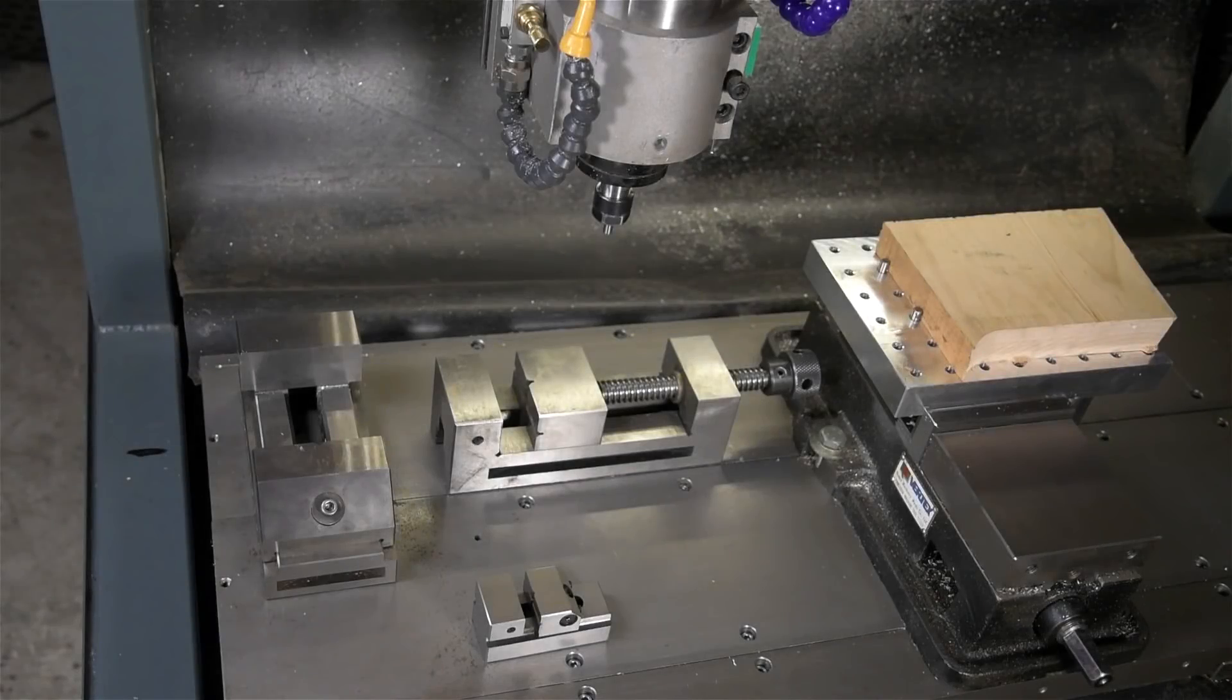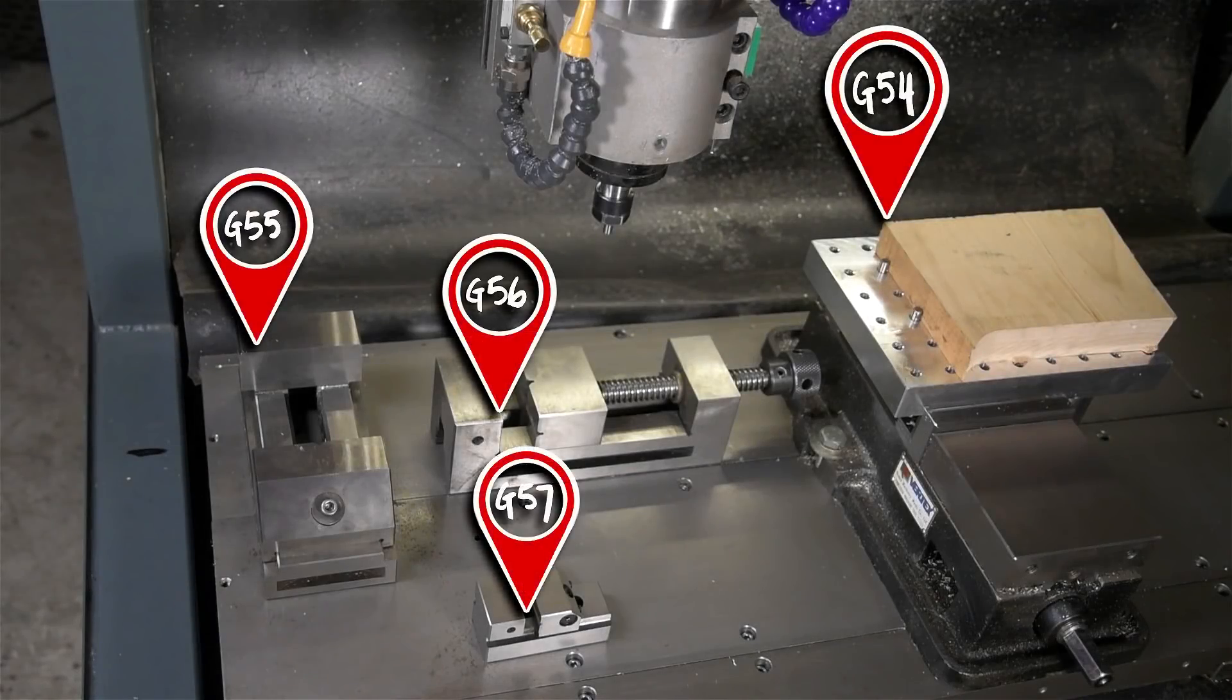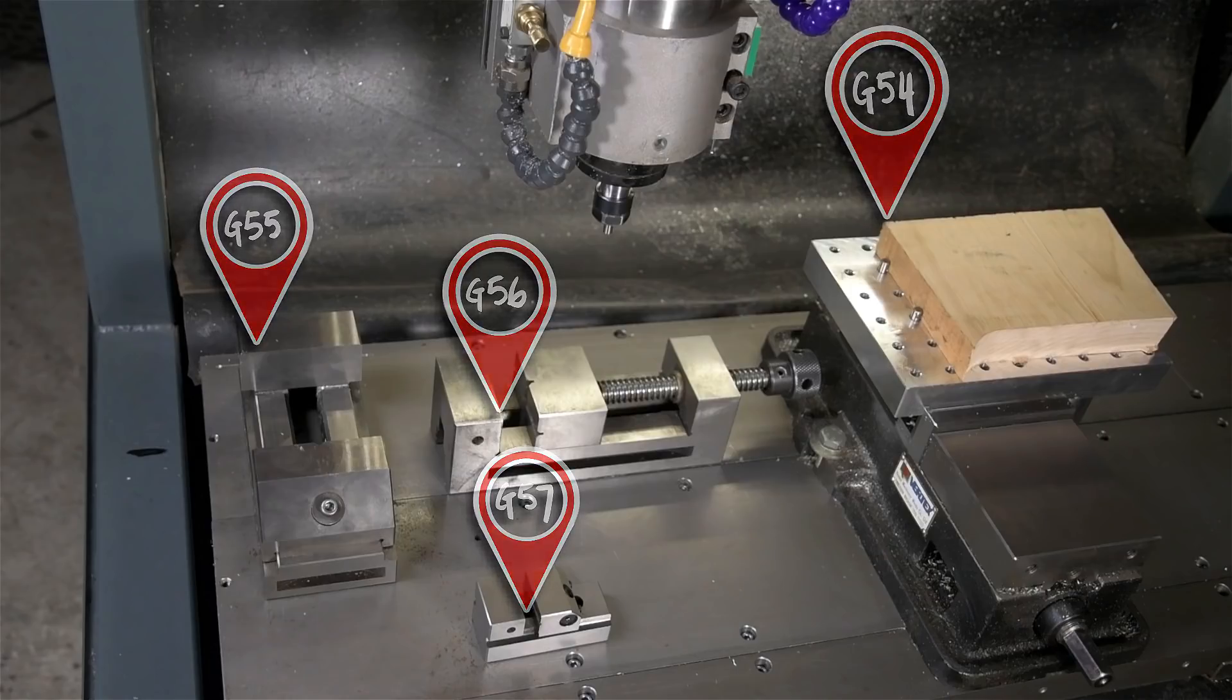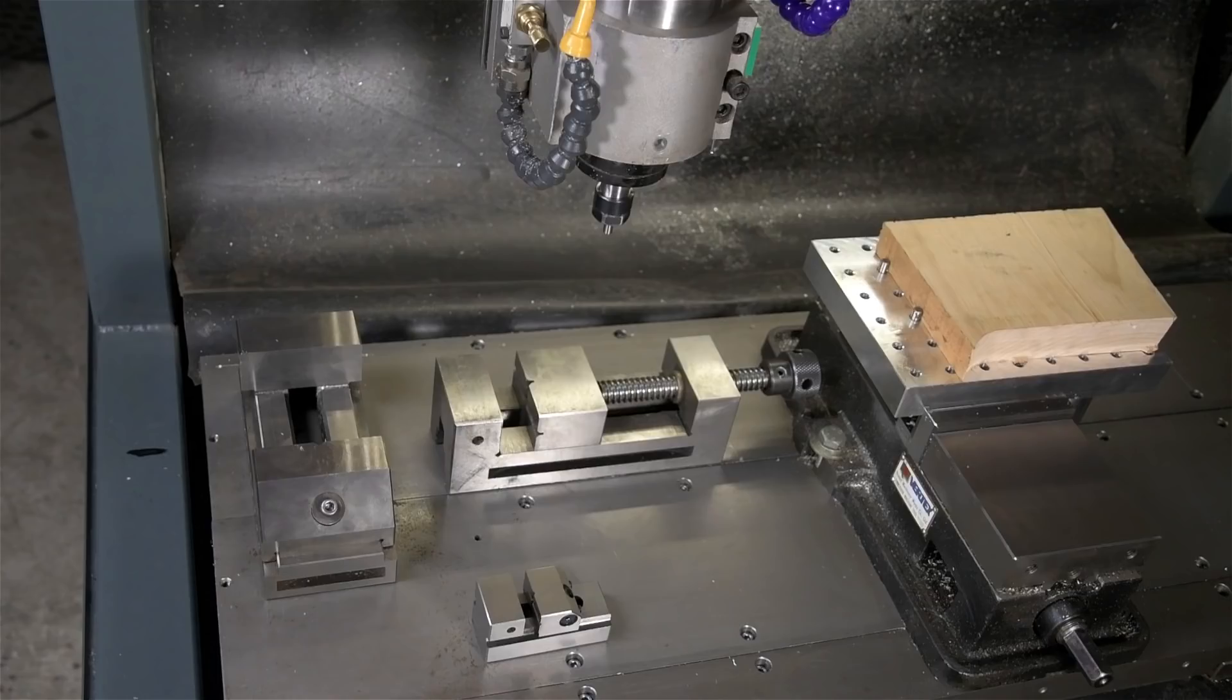To recap, here's what we've mapped out: four work offsets. These are stored in an offset table in Mach, and if you always home your machine on startup, you can get to any of those positions without having to edge find and zero again. And once you have them set up, you could run multiple parts by simply calling the offsets before the G-code.